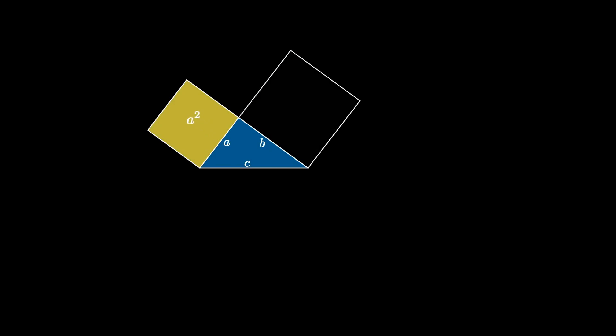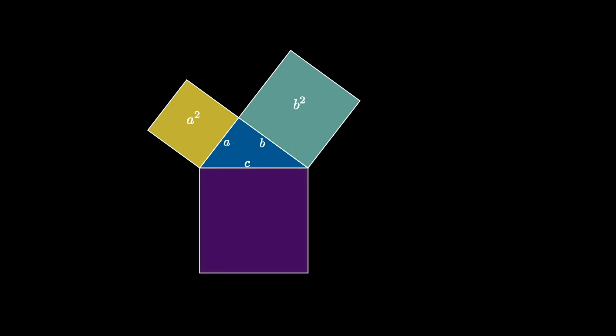Similarly, the square drawn using the side of length B has an area of B squared. And finally, the square drawn using the hypotenuse of length C has an area of C squared.